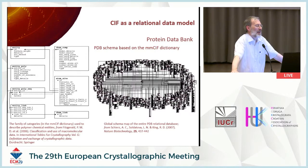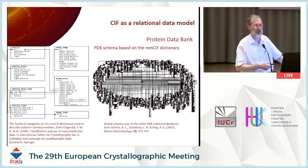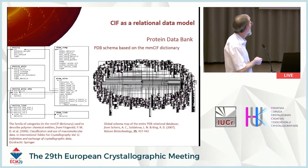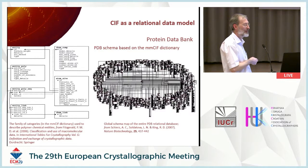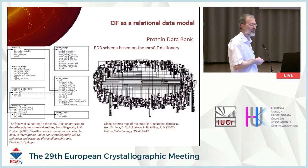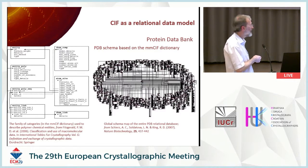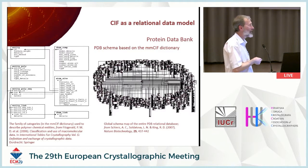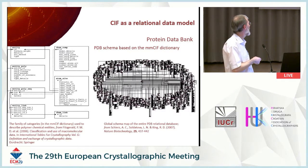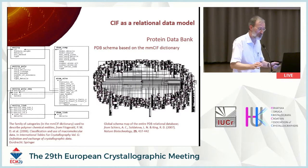So once you've set up these relationships, you can describe the MM-CIF dictionary — which is a huge morass of individual definitions — in terms of tabulated relationships between categories. If you look at International Tables Volume G, the description of the MM-CIF dictionary, the core of that descriptive text is the linkage between different categories in the dictionary. These categories map onto tables in the RDBMS version of the protein database. And a graphical representation of the protein database schema is, if you like, a graphical representation of the MM-CIF dictionary — the two are isomorphous.